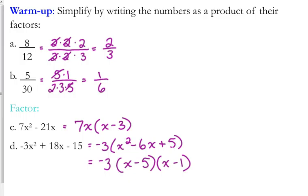8 over 12 is equivalent to 2 over 3. You can also look at it from the perspective of simplification. Similarly, 5 over 30 simplifies to 1 over 6.